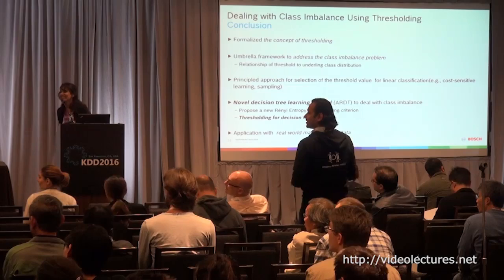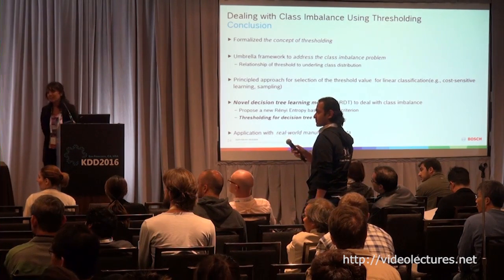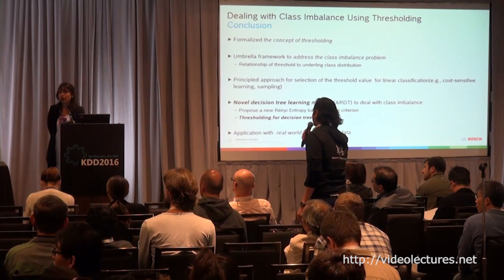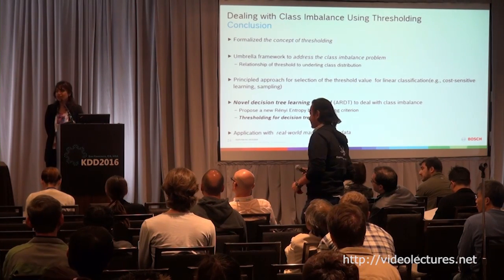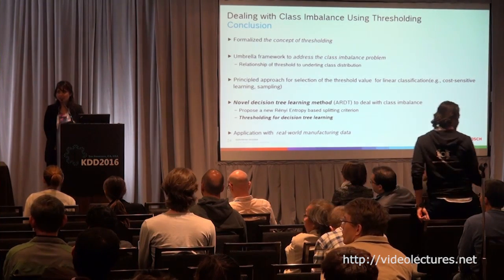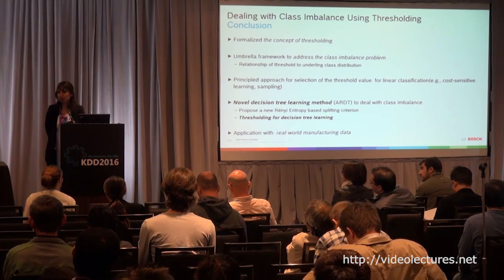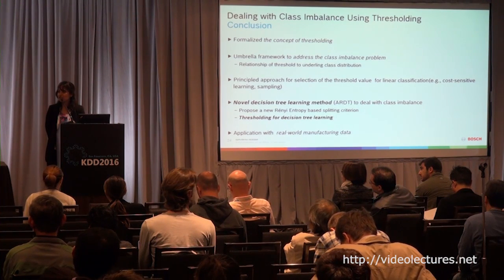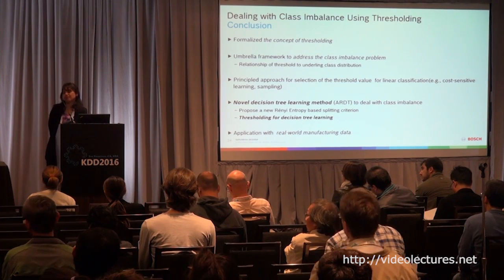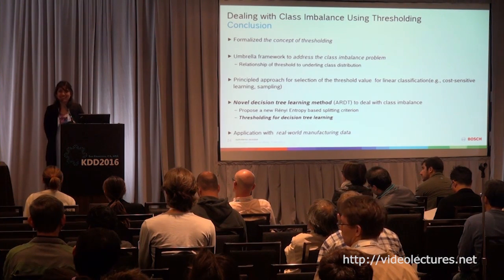Question: what is the ballpark of the class imbalance you have worked with? The speaker clarified: the one we worked with was 0.5% scrap and 99.5% good parts. But it's not 1 in 10,000, so for extreme imbalance beyond that range, we don't really know the answer.